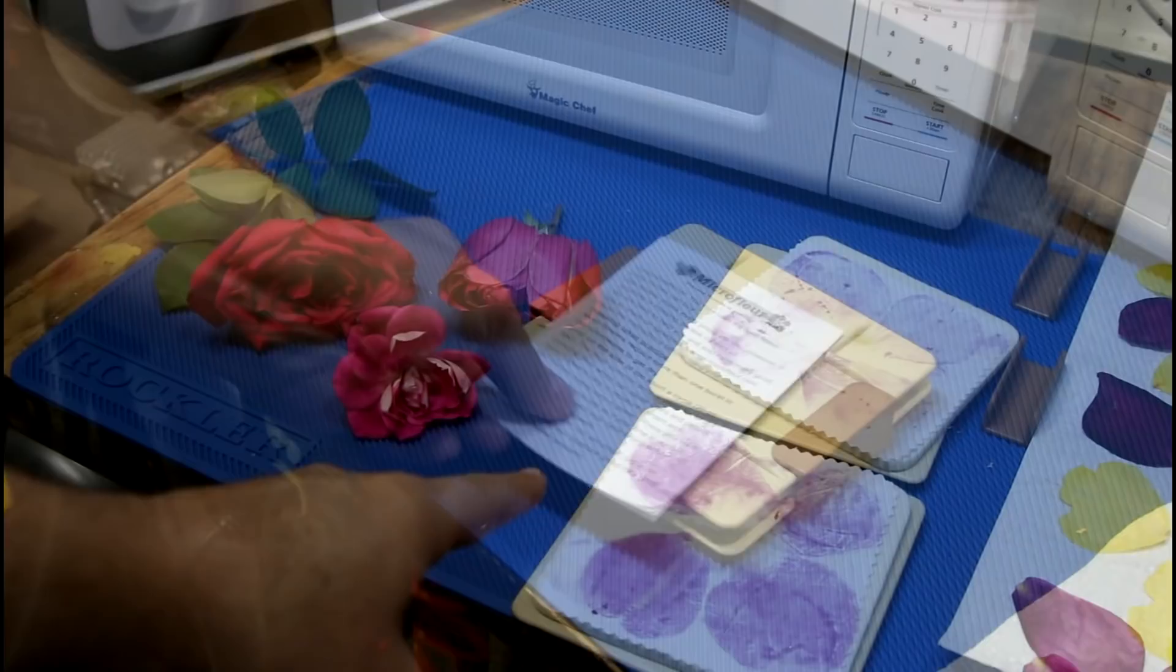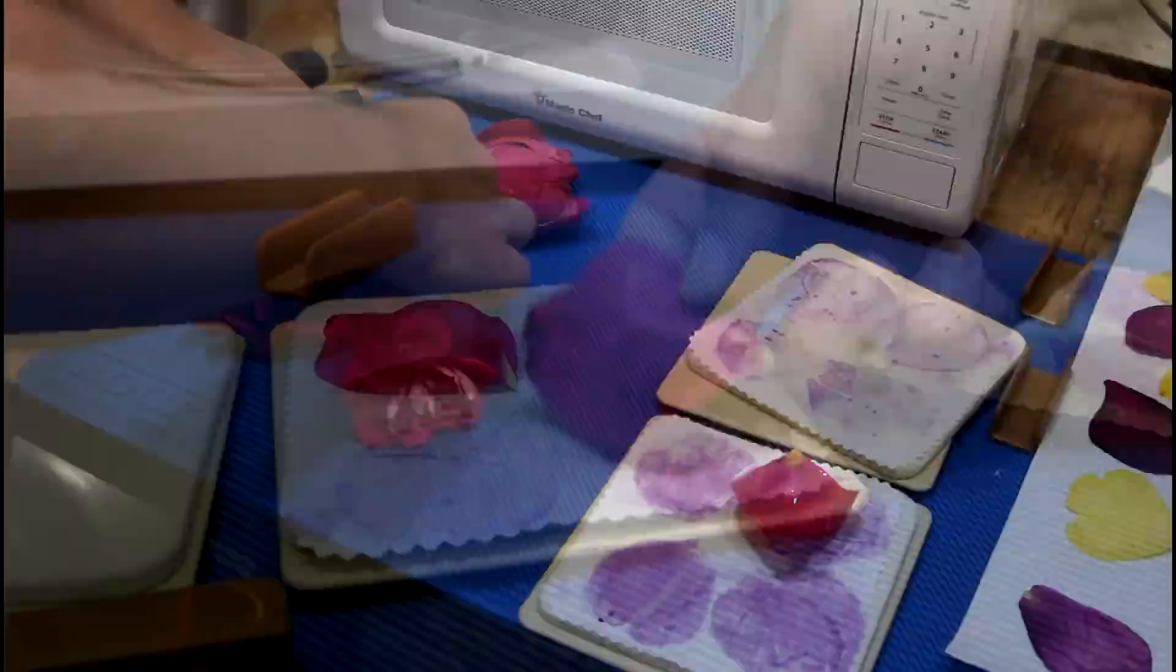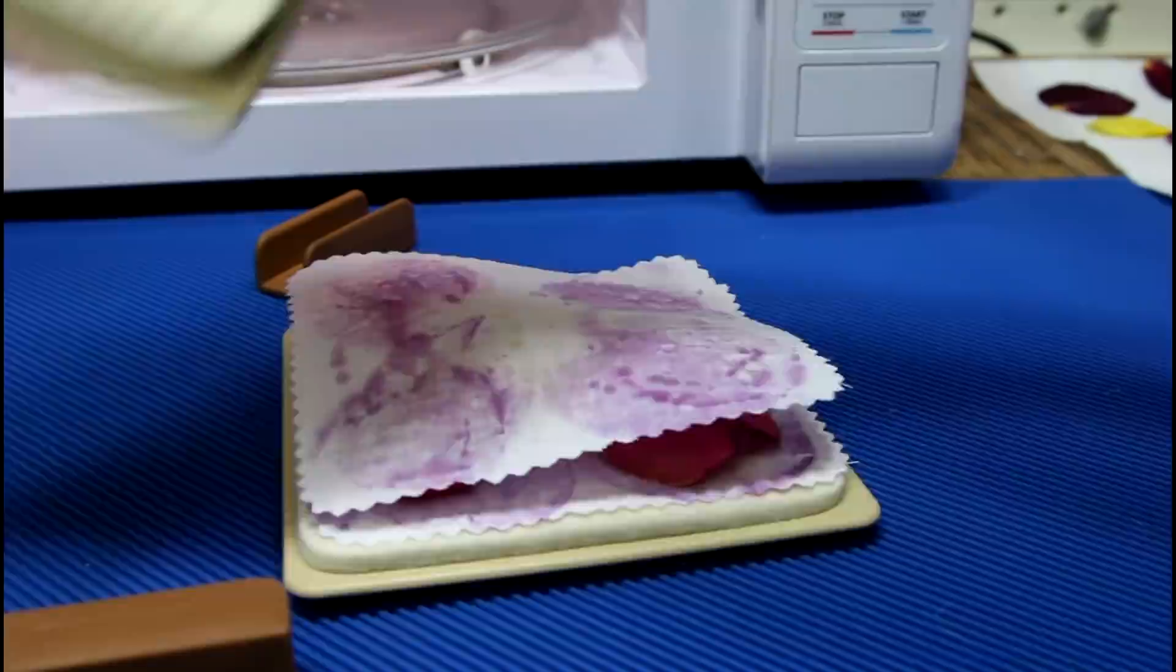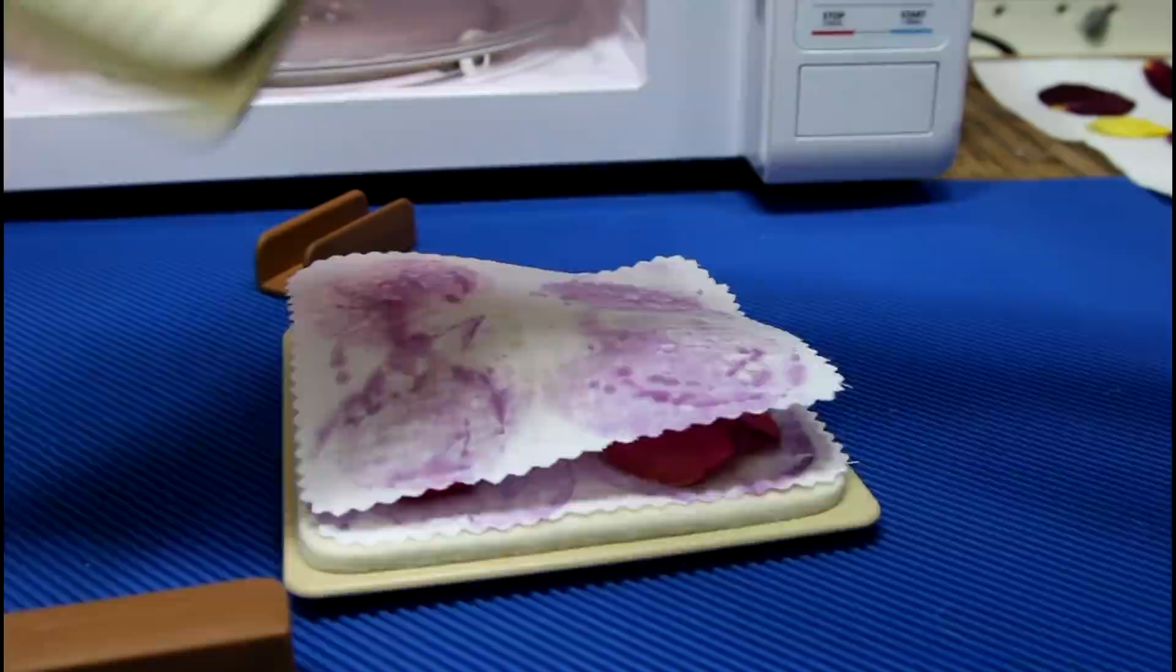Congratulations, you now own the best flower press money can buy. This little contraption here allows me to take fresh rose petals straight out of Mrs. Brown's garden and dry them in the microwave. It's basically these two pieces of felt, and then in the middle of those two pieces of felt are two sheets of cotton and then two hard plastic outer shells.